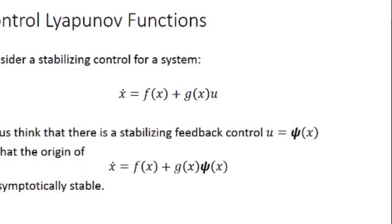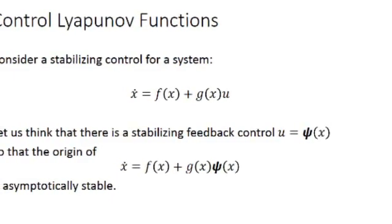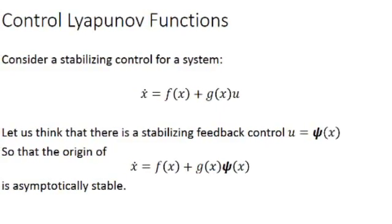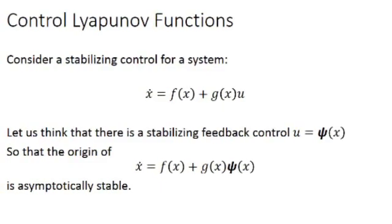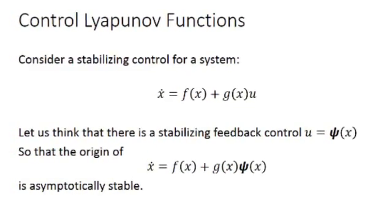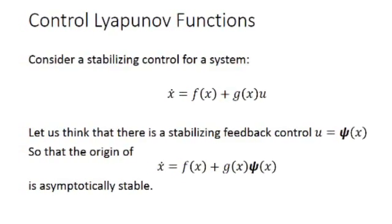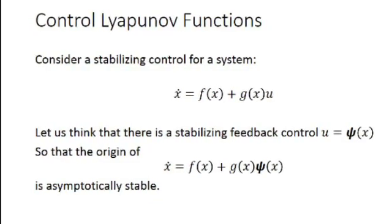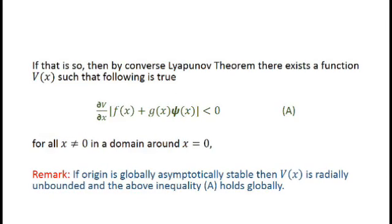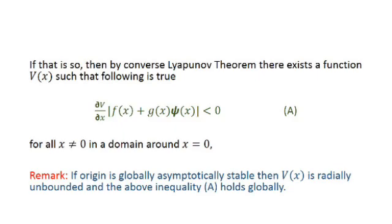We will first talk about the control Lyapunov function. Consider the system: the derivative of the state variable x equals f(x) plus g(x) times u, where u is our control signal. Let us take u equal to psi(x), our stabilizing control, such that when psi(x) is applied, the origin of the system is asymptotically stable.